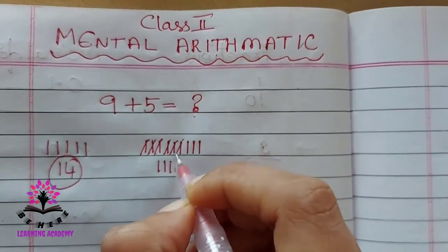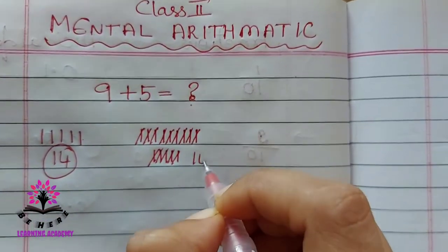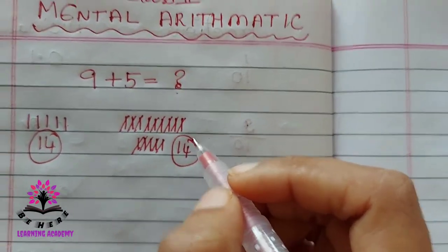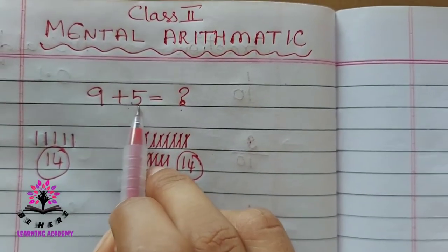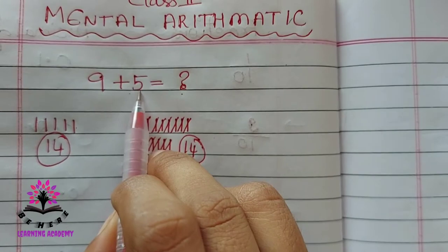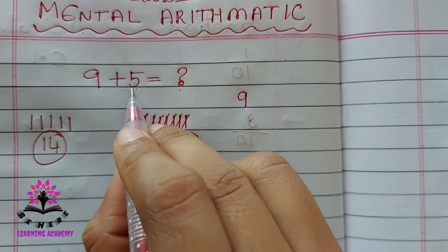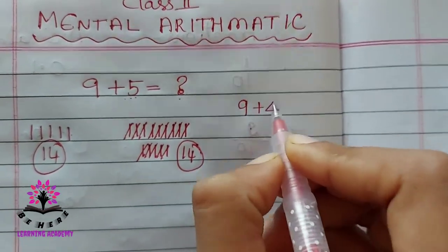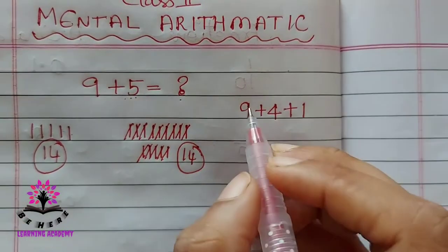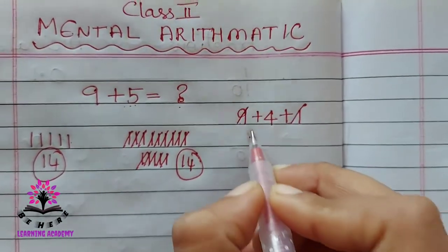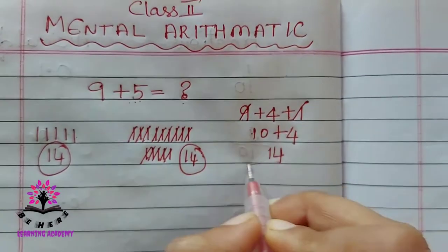One, two, three, four, five, six, seven, eight, nine, ten, eleven, twelve, thirteen, fourteen. Otherwise you can add another way. You see here: nine plus five. You can write five as four plus one. So nine plus one is ten, ten plus remaining four is fourteen. Isn't it?